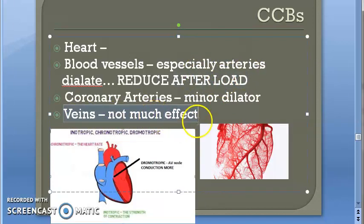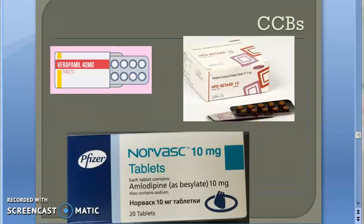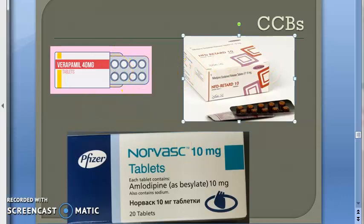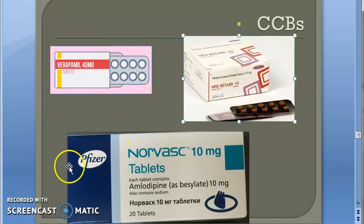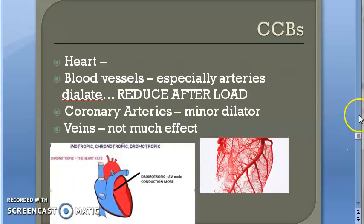Looking at pharmacokinetics: calcium channel blockers are all given orally and are well absorbed through the GI tract. They undergo first-pass metabolism, are bound to plasma proteins, metabolized in the liver, and excreted in the urine. Nothing different from what we have seen in other drug classes.